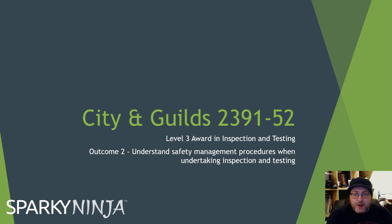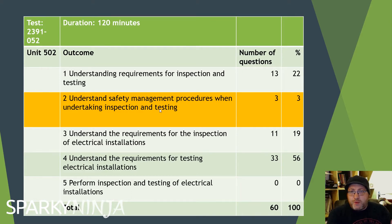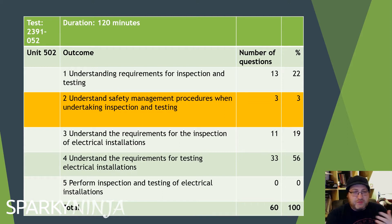Outcome 2 is very small. It mainly covers just three questions of the actual assessment, covering safety management. In Outcome 1 we discussed understanding the requirements — why we would test, when we should test, what certification we would use. This video is going to cover the second outcome, which is safety management.